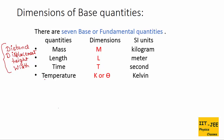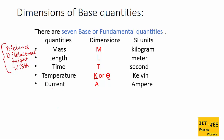The fourth fundamental quantity is temperature. Its SI unit is Kelvin, and its dimension is capital K — sometimes theta is also used as the dimension of temperature. The next is electric current; its SI unit is ampere and its dimension is capital A.